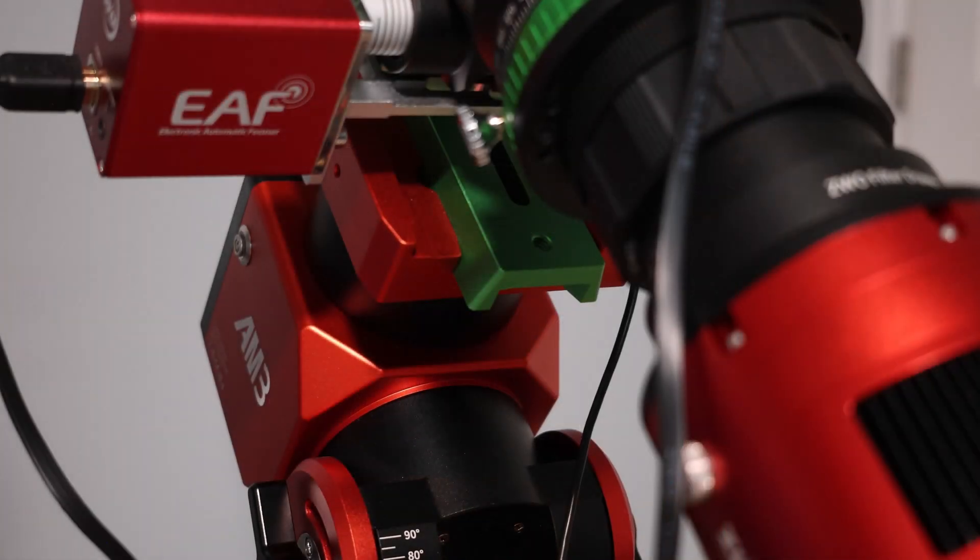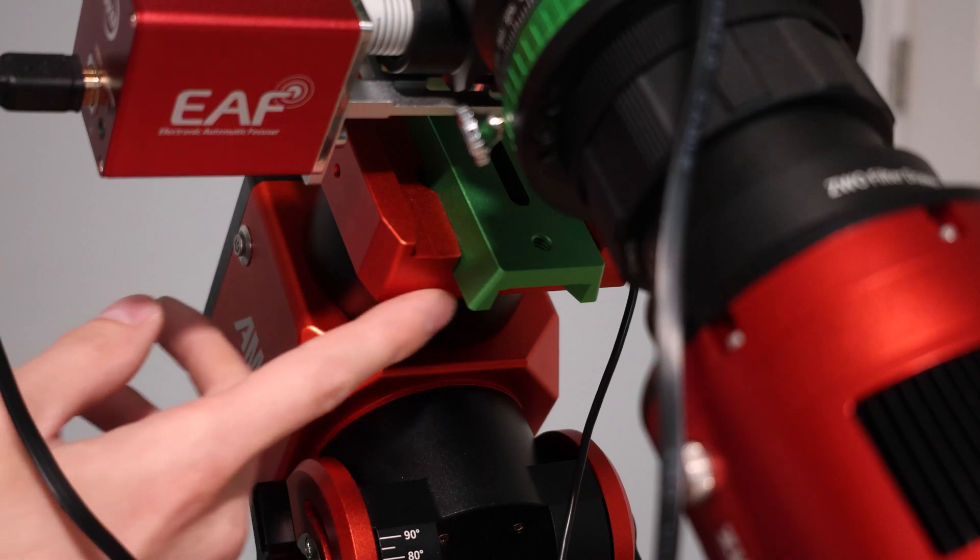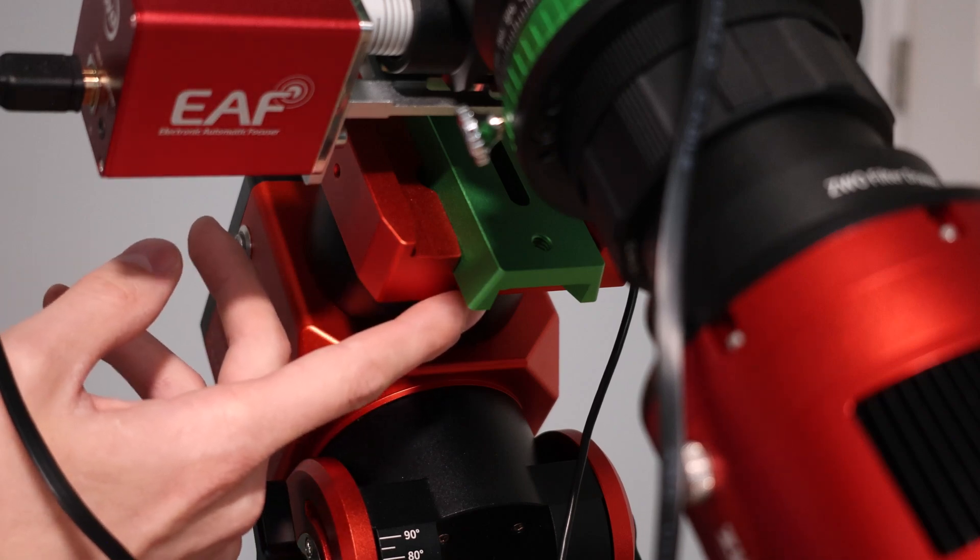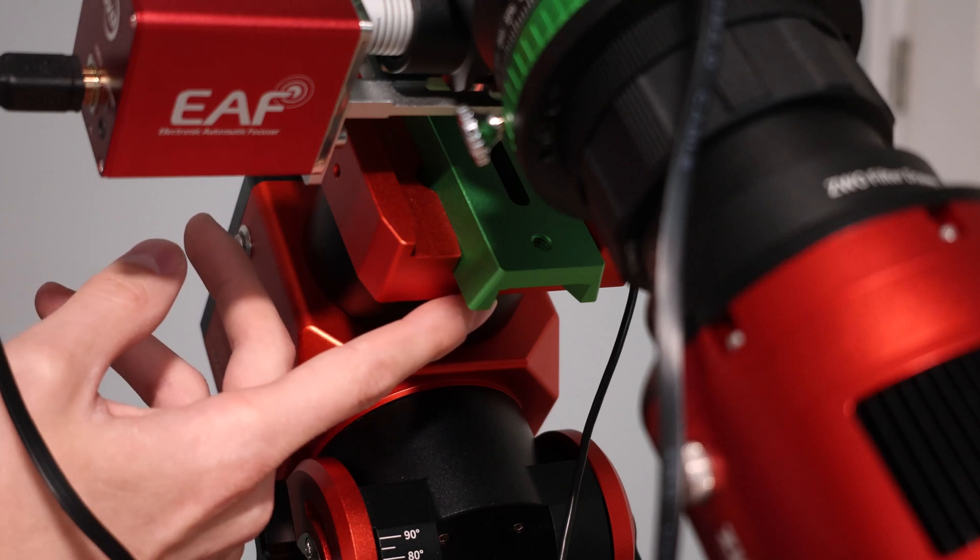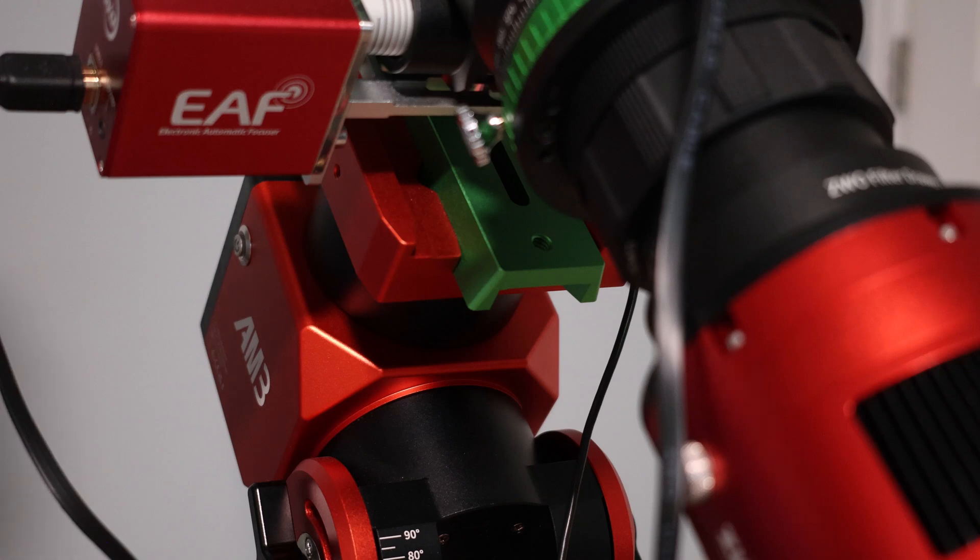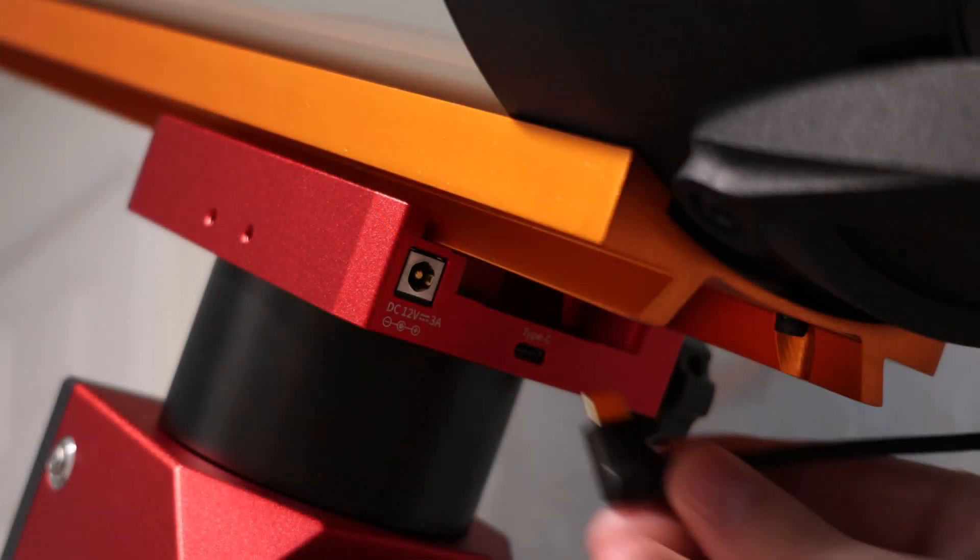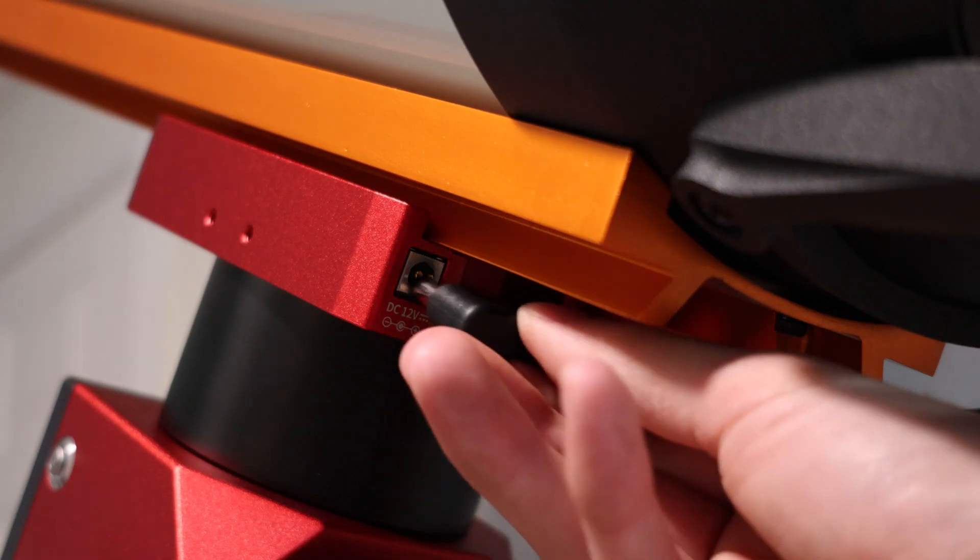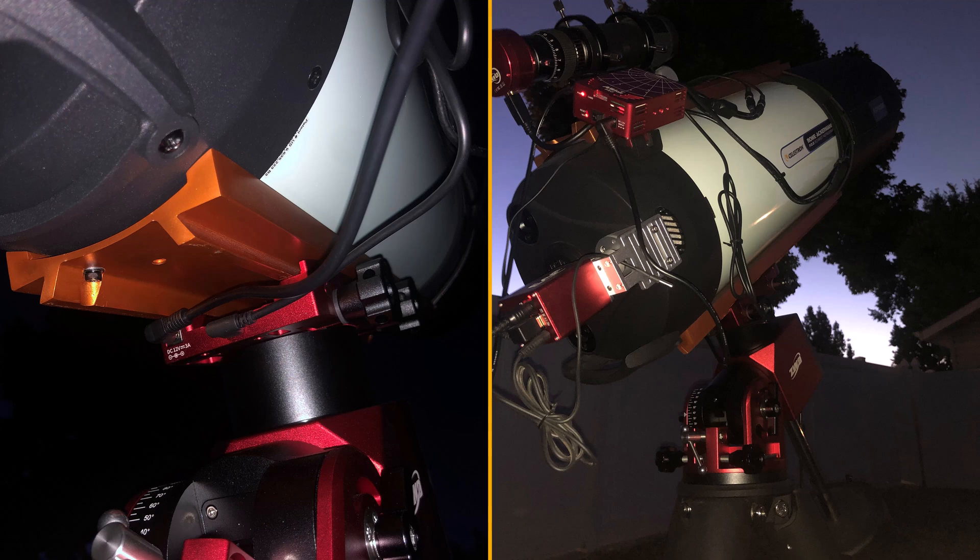One thing I'd love to see on a future version of the AM3 is that same style of saddle as the new AM5N has, where you have the USB-C to basically control the mount through the ASIAIR as well as power the ASIAIR through the mount. That's been an awesome feature of the AM5N that I've really enjoyed using, and so I hope to see that on the AM3 in the future. Speaking of the AM5N, awesome mount, great guiding performance as well, and I hope to review that shortly.